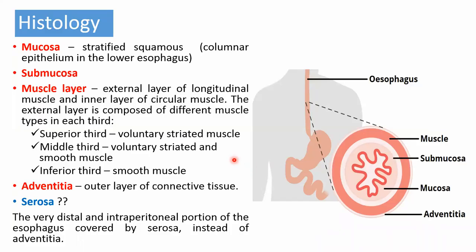The histology of the esophagus: the mucosa is stratified squamous mucosa, which abruptly changes to columnar epithelium in the lower esophagus. Then the submucosa; the muscle layer has an external longitudinal layer and an inner circular layer. The external layer is composed of different muscle types in each third: the superior third has voluntary striated muscles, the middle third has both voluntary striated and smooth muscles, and the inferior third has smooth muscle. The adventitia is the outer layer of connective tissue; the very distal intraperitoneal portion is covered by serosa instead of adventitia.